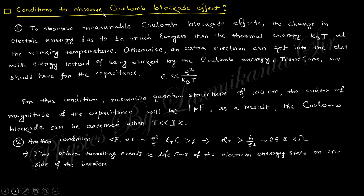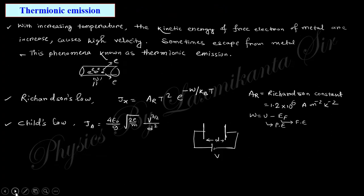The condition for observation of the Coulomb blockade is that the capacitance must satisfy a certain relation, and the corresponding temperature must also satisfy a condition. These conditions give you the Coulomb blockade.